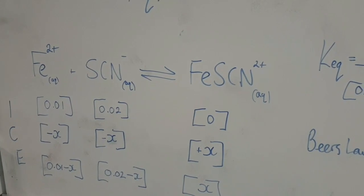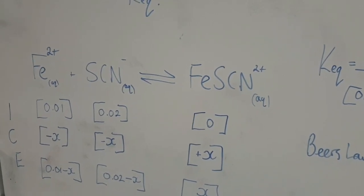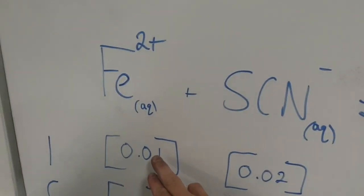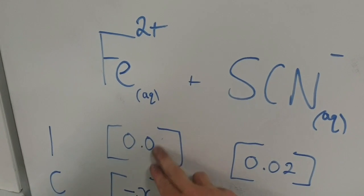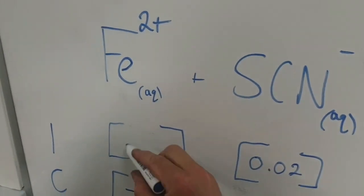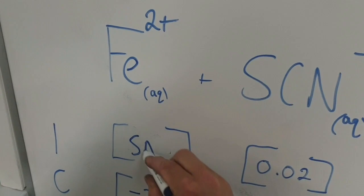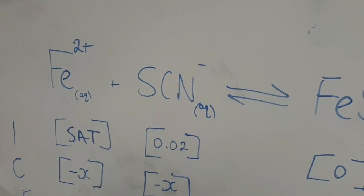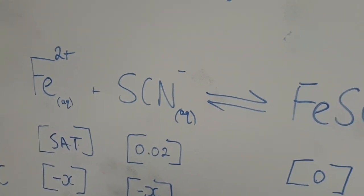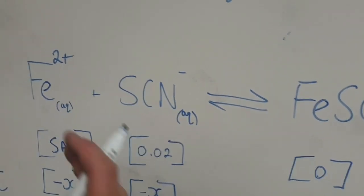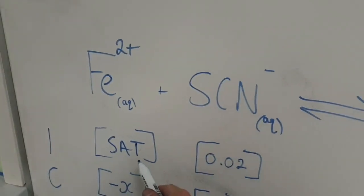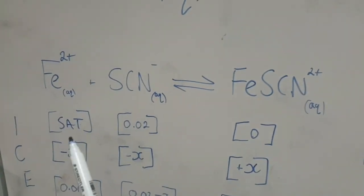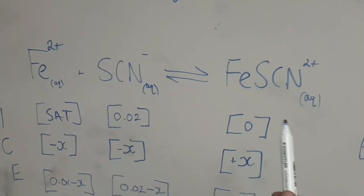Aha. Well, what if we cheat a bit? What if we, instead of having just 0.01 molar here, what happens if we overload it? Saturate it. Give it as much iron ions, or iron chloride, as it could possibly need. If we dose it up with the iron, which way will that affect the equilibrium? It's going to shift it to the right.